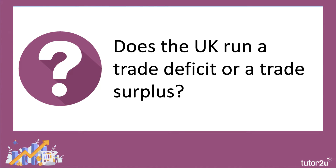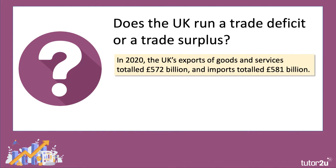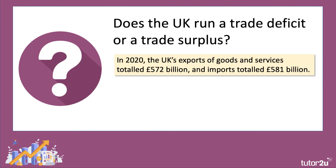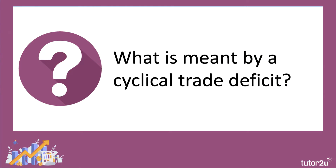What about the UK economy — does it run a trade deficit or a trade surplus? Well, in 2020 we exported goods and services worth over 570 billion pounds, but our imports accumulated a total value of 581 billion, so there was a trade deficit in goods and services of 10 billion pounds. We actually run a huge deficit in goods — physical tangible goods like oil and motor cars — partially offset by a surplus of 106 billion on trading services.